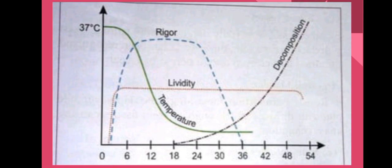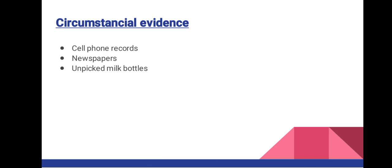A graph of temperature against time after death in hours can show rigor mortis, lividity (livor mortis), temperature, and decomposition together. Circumstantial evidence is another factor — such as cell phone records showing the last call or text, uncollected newspapers and their dates, or unpicked milk bottles. For example, two uncollected milk bottles at a daily pickup spot would suggest the person has not been at that location for two days.